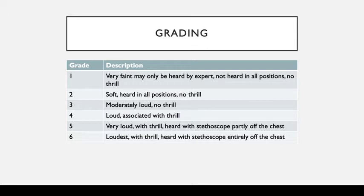The next thing to mention is murmur grading, which is relevant especially during OSCEs. When you hear a real murmur, you have to describe it and state the grade. Grade 1 is barely audible. If you can hear it clearly, it's usually around grade 2 or 3. Grades 4, 5, and 6 are associated with a palpable thrill. This is something you can read up on.